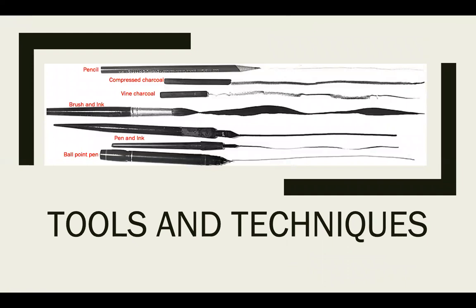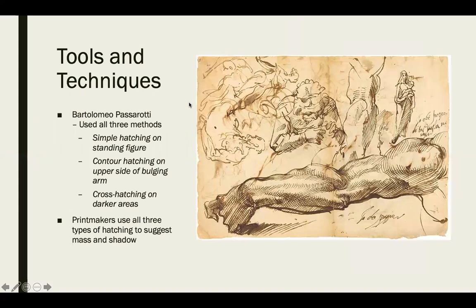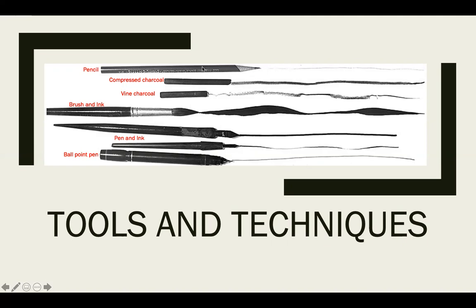Let's go through some tools and techniques, because drawing isn't just pen and paper — there are some unconventional ones that you might not think fit into this category. Starting with pencil: you'd expect the kind of variation in mark-making it can produce. Compressed charcoal is a very dark medium, good for adding a lot of value — your nines and tens — with good variation in thickness and thinness of lines.